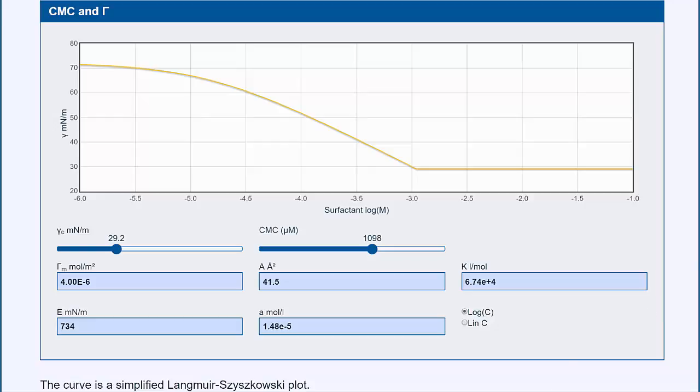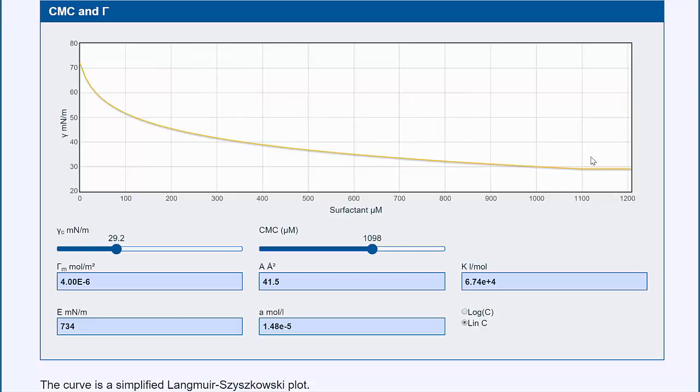But another thing is that if you plot the famous curve of surface tension versus surfactant concentration in log mode, something exciting seems to happen here. But if you do it in linear mode, actually nothing exciting happens around the CMC.